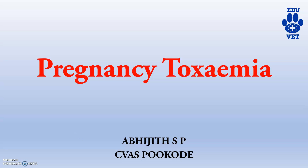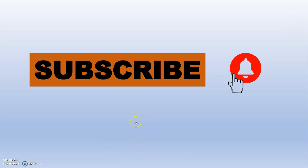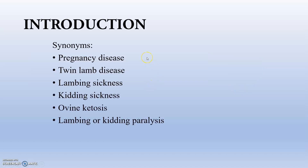Welcome back to the channel. Today's topic is pregnancy toxemia, a condition occurring during pregnancy in veterinary medicine. The synonyms of pregnancy toxemia include pregnancy disease, twin lamb disease, lambing sickness, feeding sickness, ovine ketosis, lambing paralysis — these are the other names for pregnancy toxemia in sheep and goat.